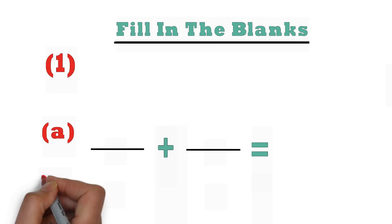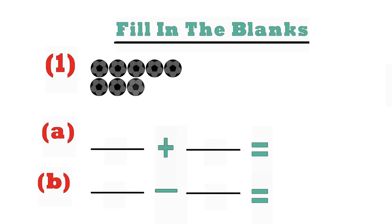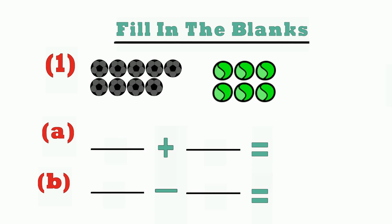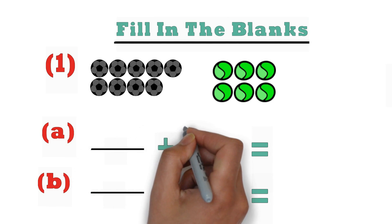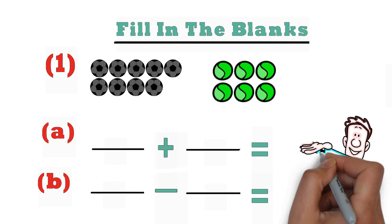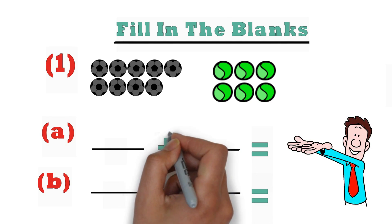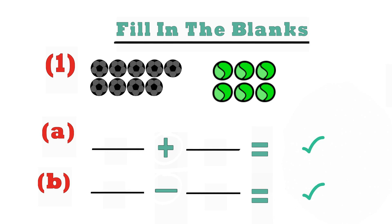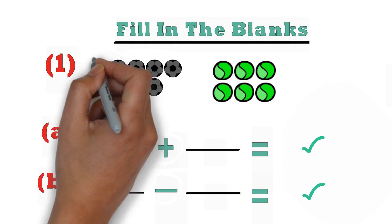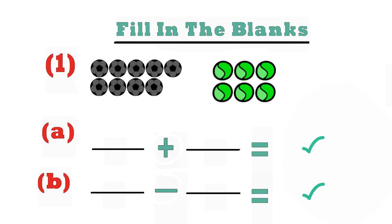So in the first question, we've got fill in the blanks. We've got a couple of blanks over here, and they have given us a couple of objects. We see two types of balls — the first type is a football, and the other type is tennis balls. So now we are supposed to be making two types of equations using these two kinds of balls. When you're working out with questions like this, you need to really observe what they have given us in the middle — an addition symbol as well as a subtraction symbol. So we can simply count these balls and put the numbers in these blanks.